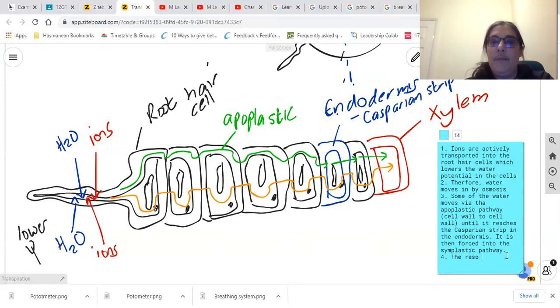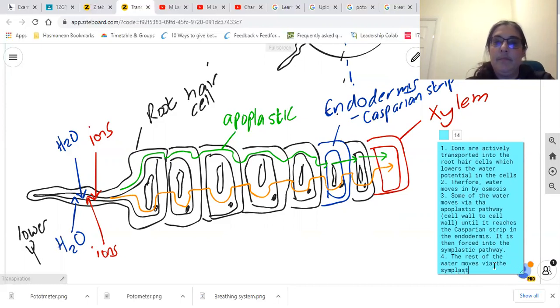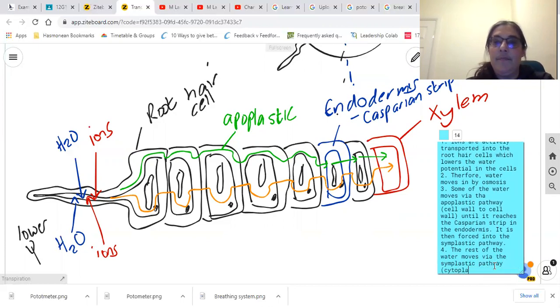So the rest of the water moves via the symplastic pathway, which is cytoplasm to cytoplasm.